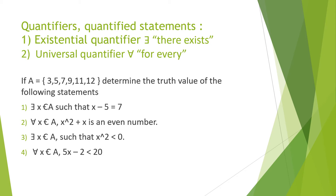The third statement is: there exists x belonging to A such that x² < 0. All members of A are natural numbers, and the square of a natural number is always positive. So x² < 0 is not possible for any natural number. Therefore the statement is false and its truth value is F.